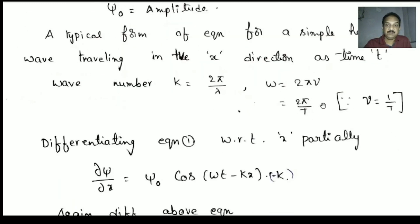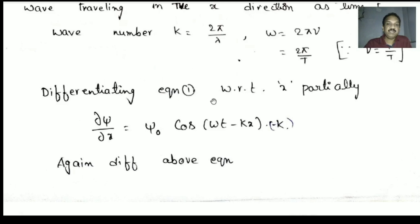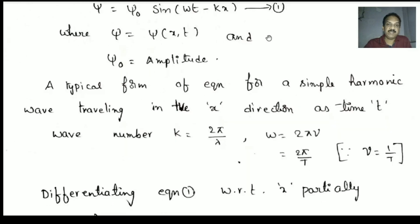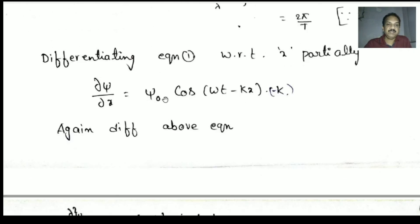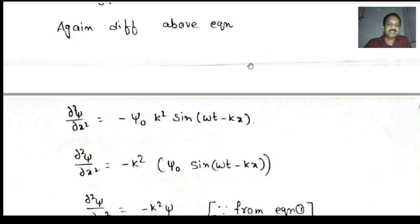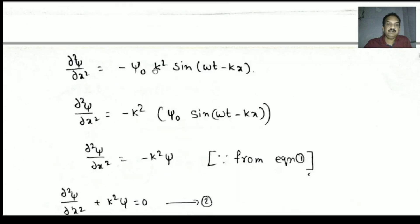Now differentiating equation 1 with respect to x partially: ∂ψ/∂x = ψ₀ cos(ωt − kx)(−k). Differentiating again: ∂²ψ/∂x² = −ψ₀ k² sin(ωt − kx). Taking k² out, the remaining ψ₀ sin(ωt − kx) is similar to equation 1, that is psi.